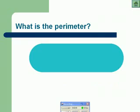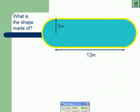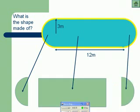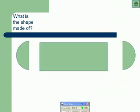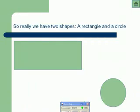So we're being asked to find the perimeter of a composite shape. We've got the length of it being 12 metres and the radius of one of the circles being 3 metres. The perimeter is the distance all the way around the outside of the shape. We need to decide what the shape is actually made up of — we've got a semicircle, a rectangle, and another semicircle. Our two semicircles, if we join them together, will make one full circle. So we've got a rectangle and a circle.